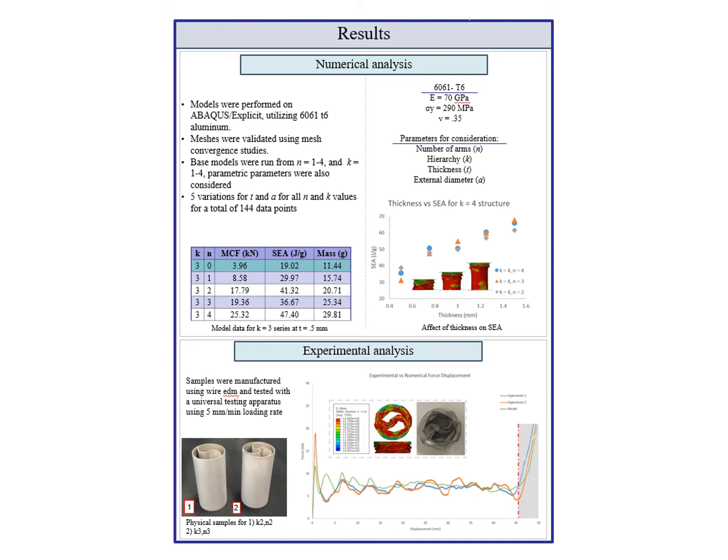To validate numerical models, experimental samples were produced using a wire EDM shown in the bottom left. These samples were compressed at a 5 mm per minute loading rate compared to the numerical results. When compared, the models were shown to be reasonable approximations of the experimental setup.